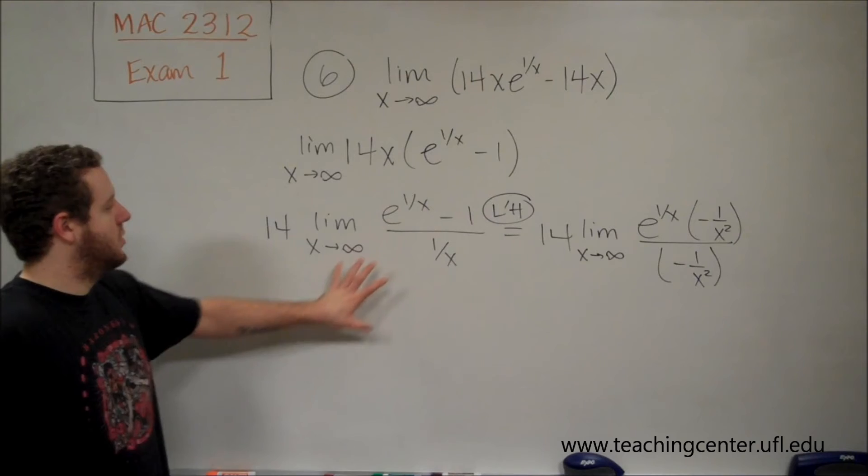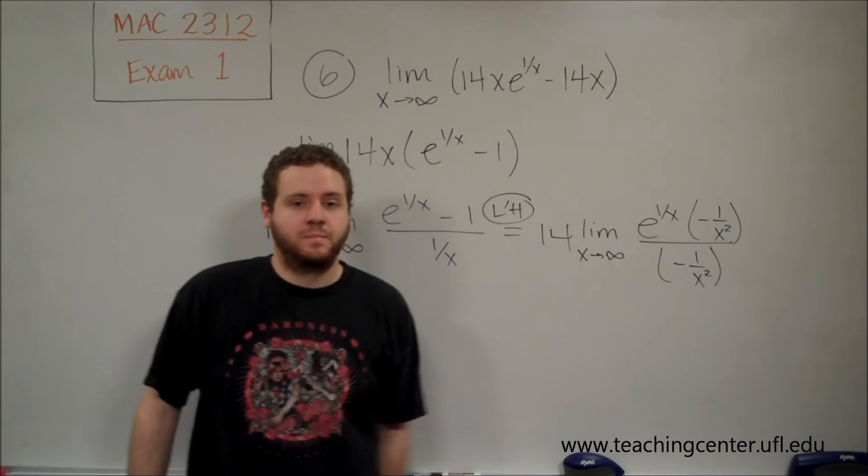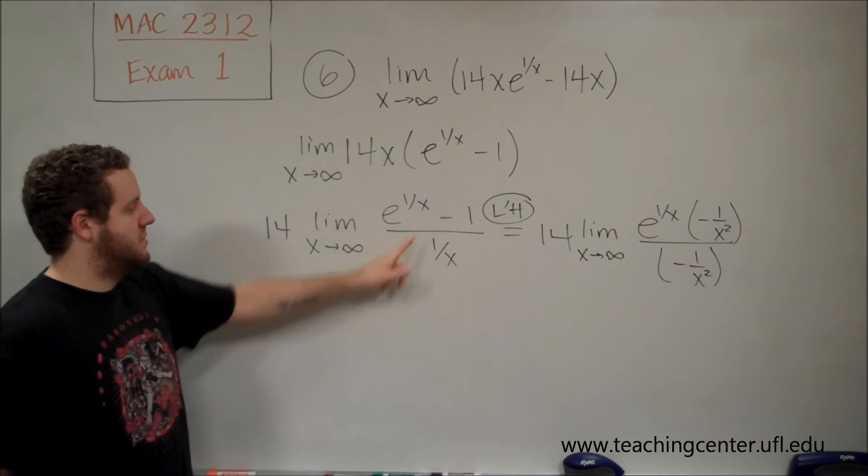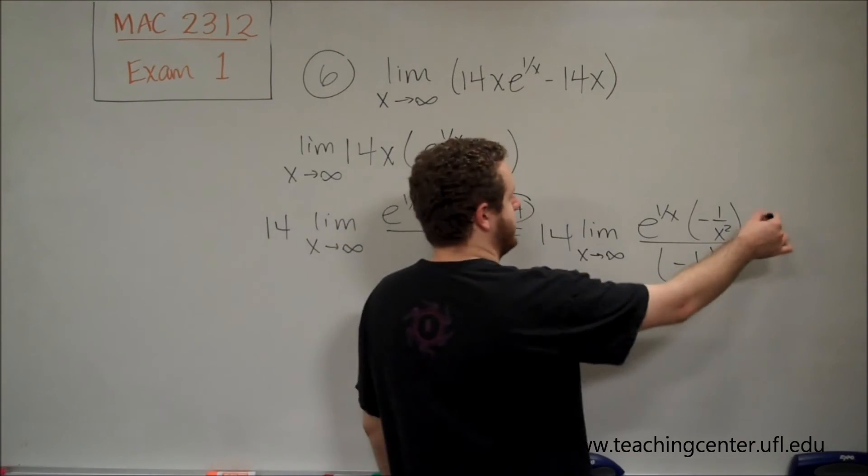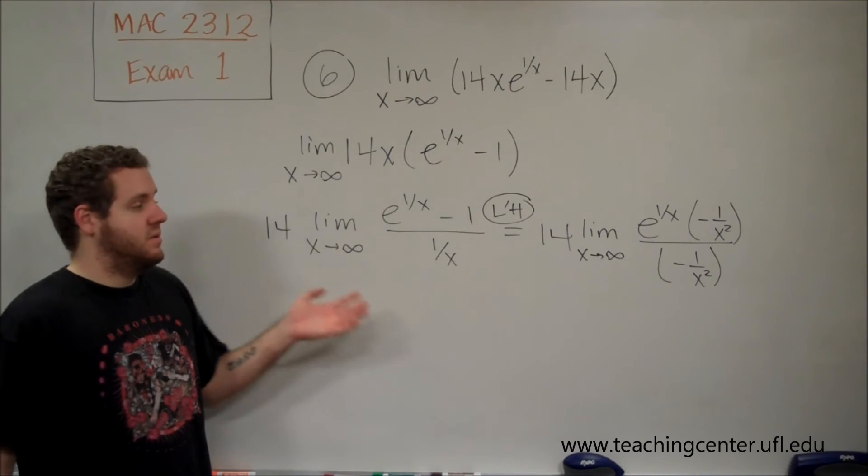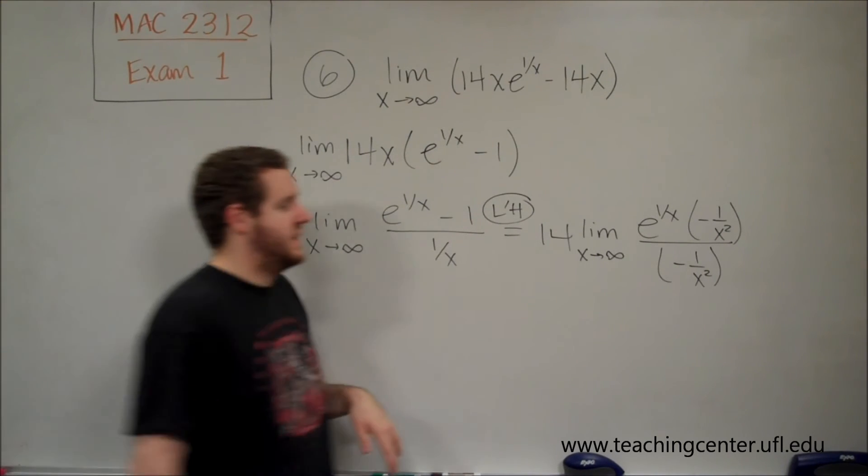By L'Hôpital's rule, this limit and this limit are the same. The limit on the right is easier to figure out. Remember, since we had minus 1, that doesn't appear here. We have -1/x² on the numerator and the denominator, so those cancel out.